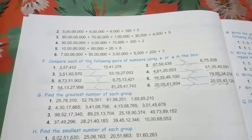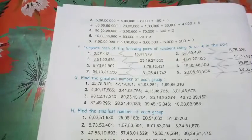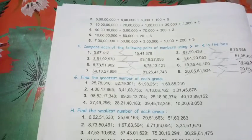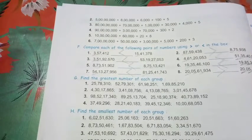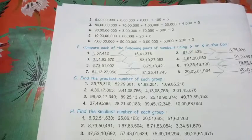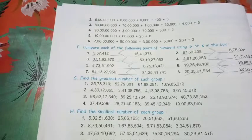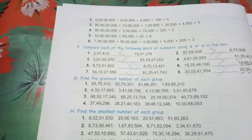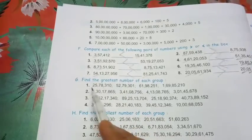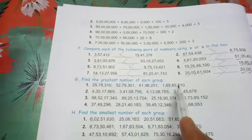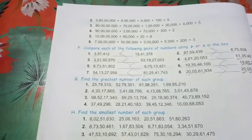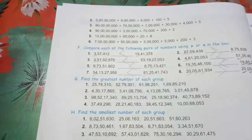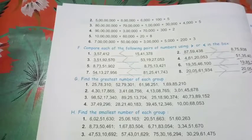I hope the concept is clear. Next let us start question number G: find the greatest number of each group. We have been asked to find out the greatest number — in question number one there are four figures and we have to find out which is the greatest among those four.